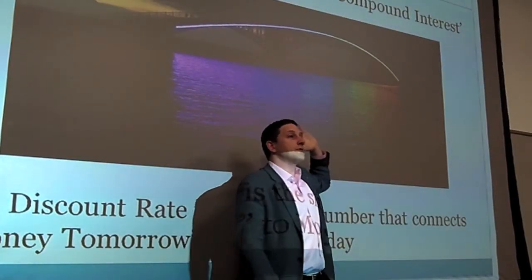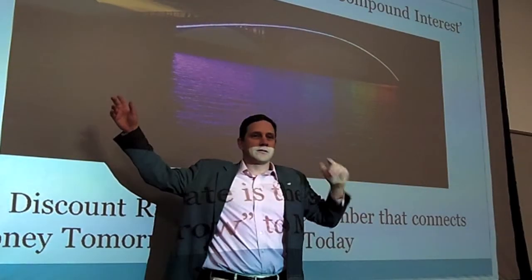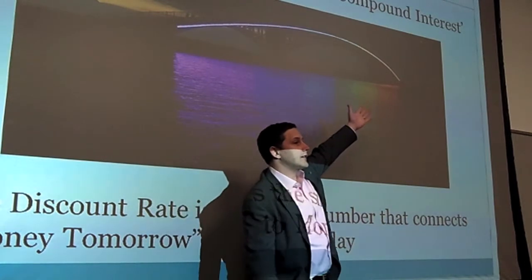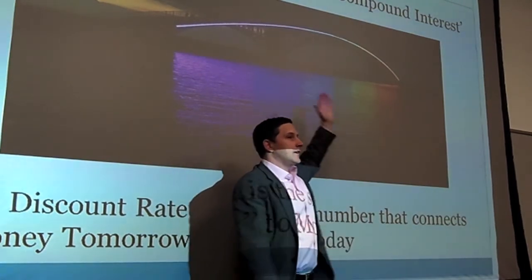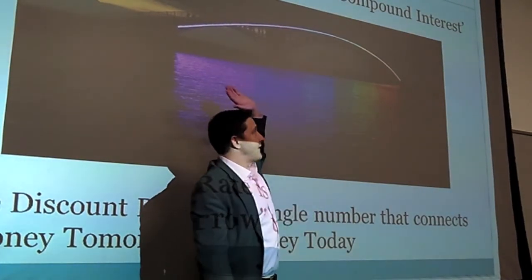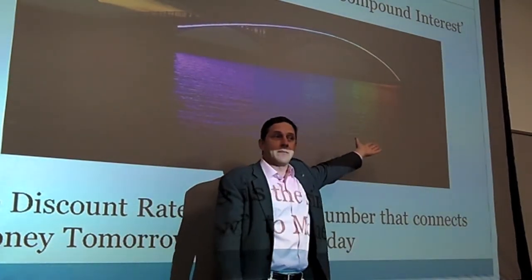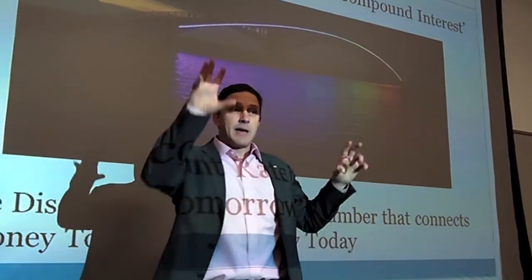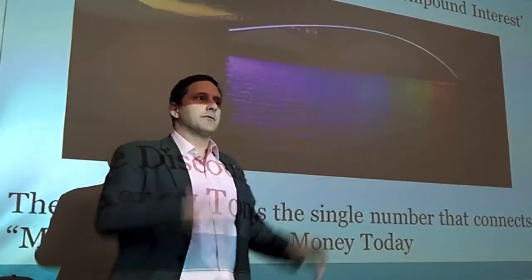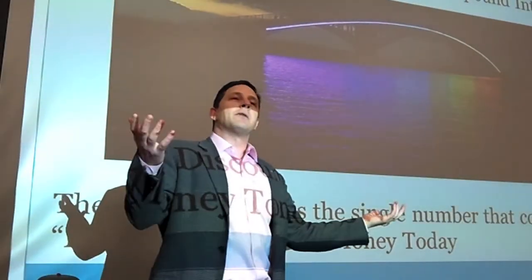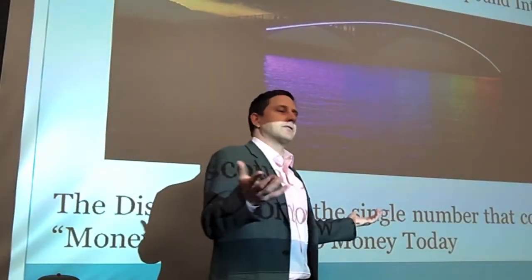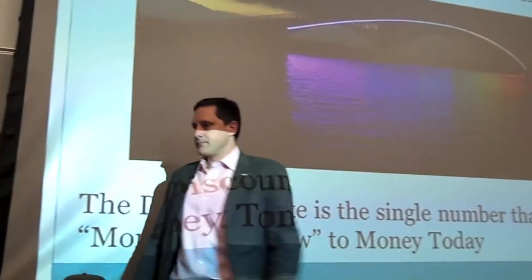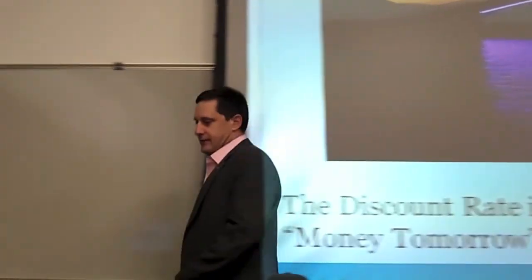Nope. Turns out the only way this math works — between how much John's got and eight years later for his kid — he needs a 17 percent return. That might be a reality check once he does the math, because there is no way to get a 17 percent return without involving illegal activities.